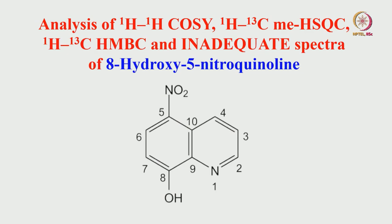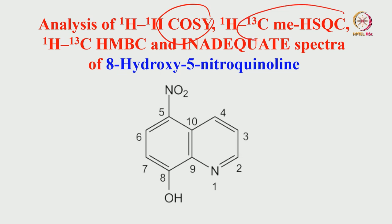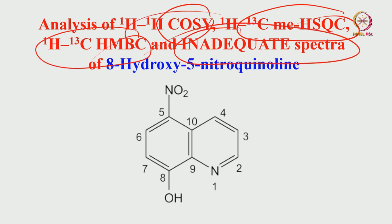We will now take a molecule and analyze four types of spectra: COSY, multiplicity-edited HSQC, carbon-13 proton HMBC, and the INADEQUATE spectrum. Using all four together, we will know the structure of the molecule. Let us start with the proton-proton COSY.